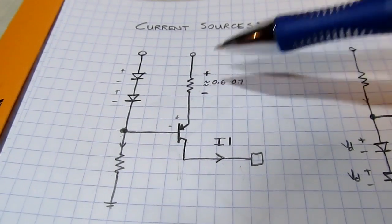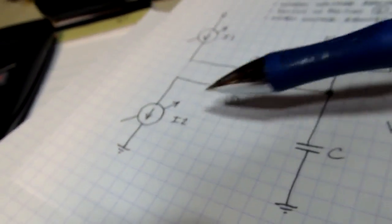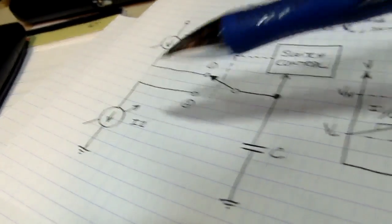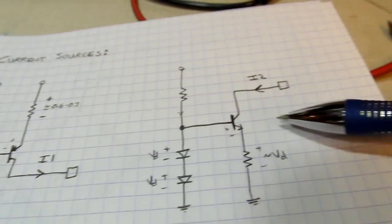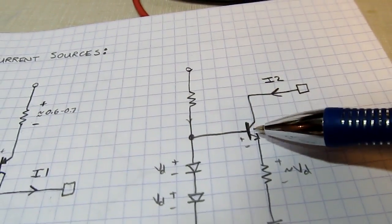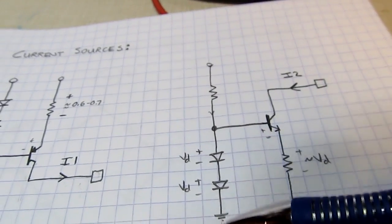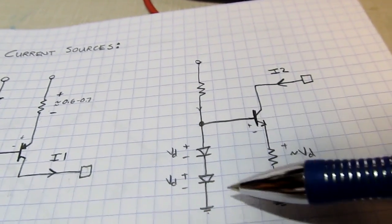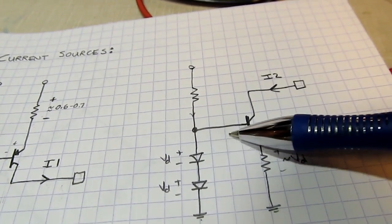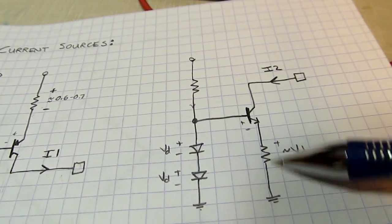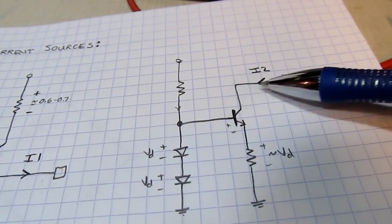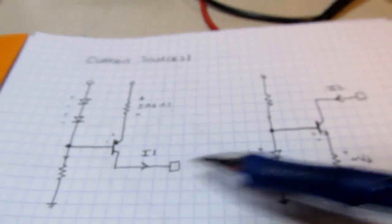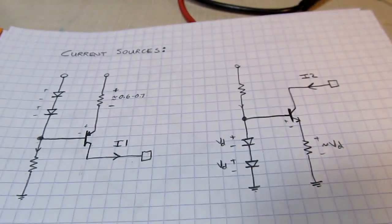The lower current source is more of a current sink — it's the same circuit turned around using an NPN transistor biased on a couple of diodes. Two diode drops up and one diode drop down gives a diode drop across the resistor. Varying that resistor value varies the current. Those are the two current sources.